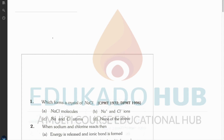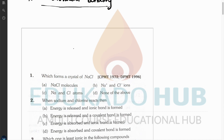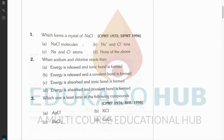From now on we will be doing topic number one, which is electrovalent bonding. Here are some questions on this topic. What we will do is go through each and every question and try to understand the theory on the spot related to it, so we can understand how to handle the questions. The first question states: which forms the crystals of NaCl?